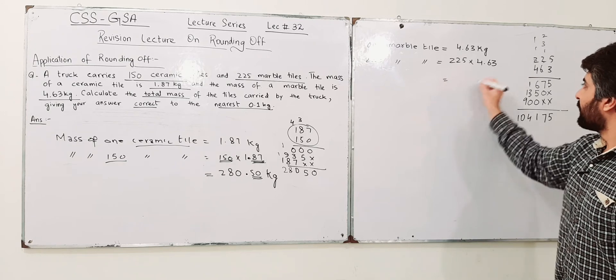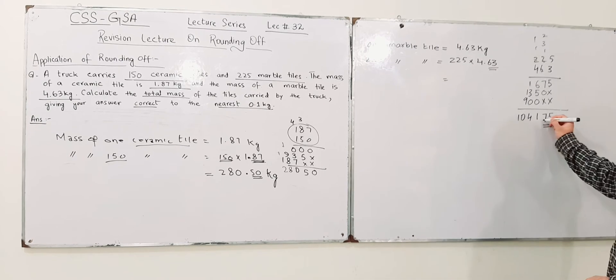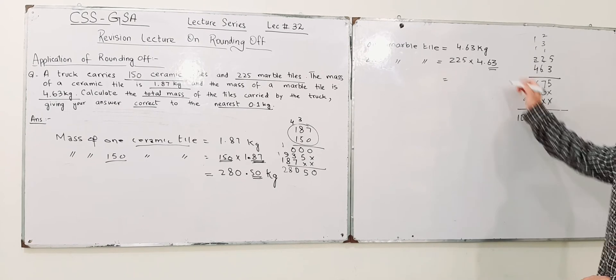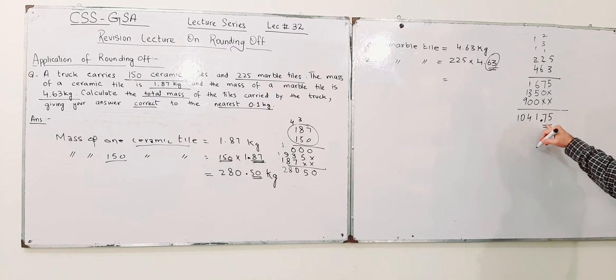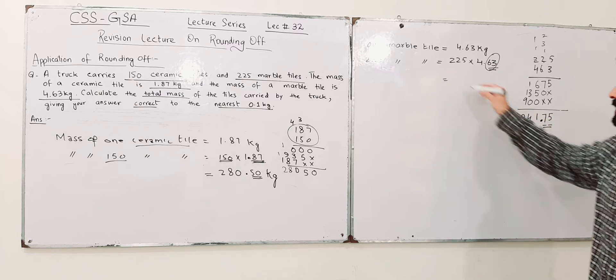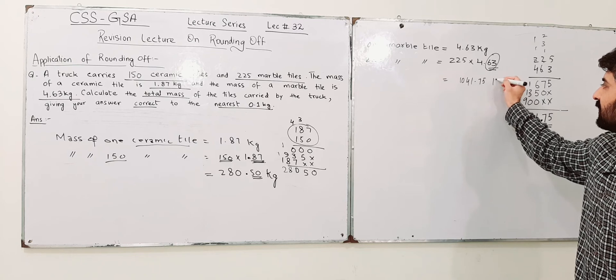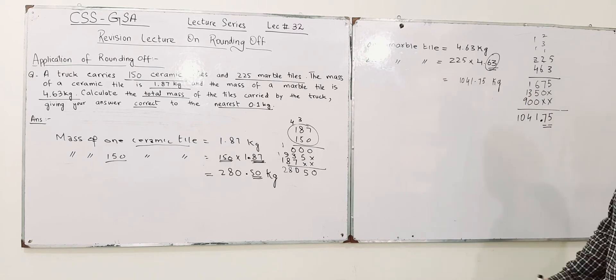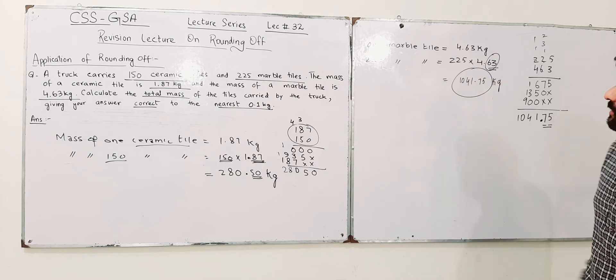So it is 2 numbers after the decimal over here. So you have 2 digits after the decimal over here. There is no decimal over here, but I need decimal over here because I have 2 digits after the decimal in my question. So there should be 2 digits after decimal in the answer. So it is 1041.75.